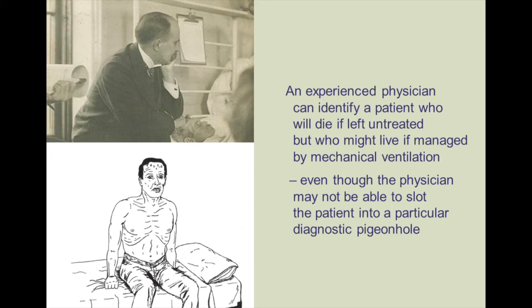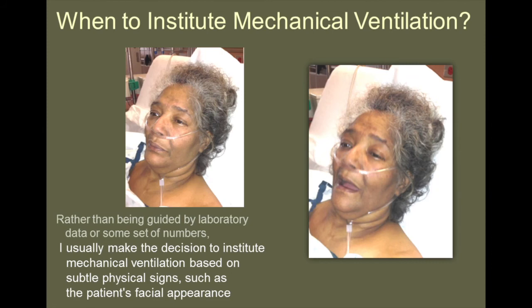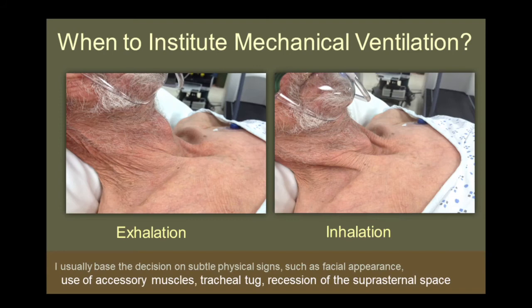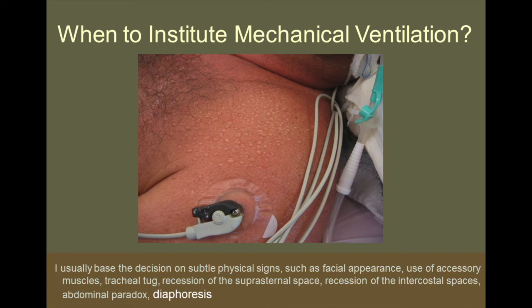An experienced physician can identify a patient who will die if left untreated but who might live if managed by mechanical ventilation, even though the physician may not be able to slot the patient into any particular diagnostic pigeonhole. Rather than being guided by laboratory data or some set of numbers, I usually make the decision to institute mechanical ventilation based on subtle physical signs — such as the patient's facial appearance, the configuration of the mouth, the presence of nasal flaring, the use of accessory muscles, tracheal tug, recession of the suprasternal fossa, recession of the intercostal spaces, the presence of abdominal paradox, diaphoresis, and the patient's mental status.